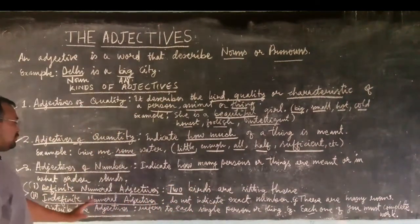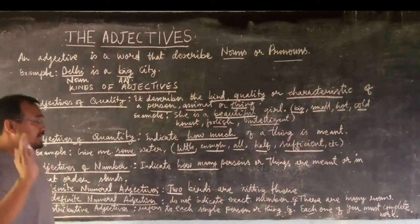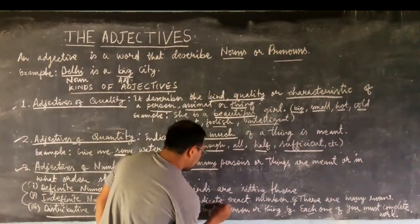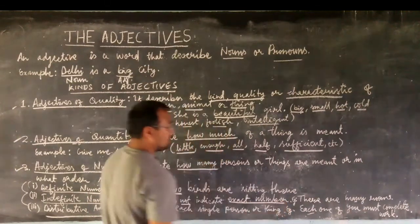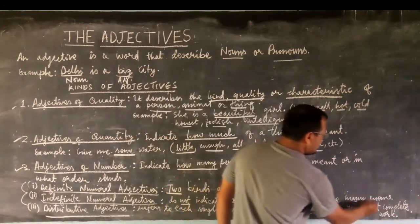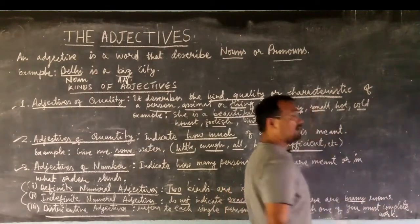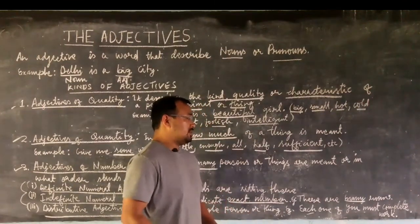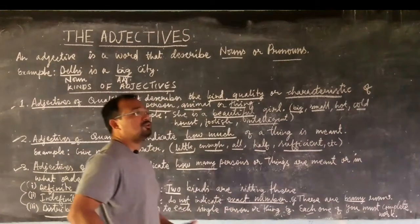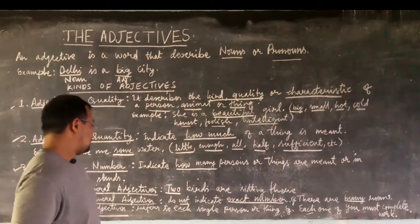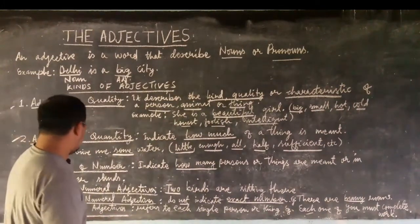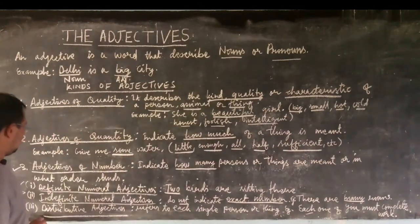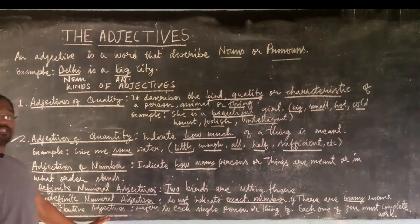An indefinite numeral adjective does not have an exact number. For example, 'There are many rooms.' The word 'many' does not tell us the exact number — it could be rooms in a hotel or classrooms. Since no exact number is mentioned, 'many' is an indefinite numeral adjective.